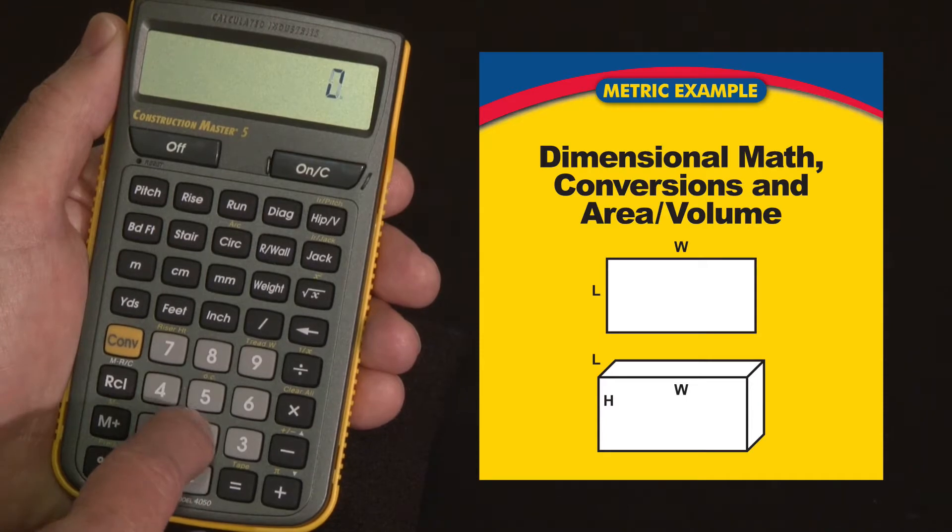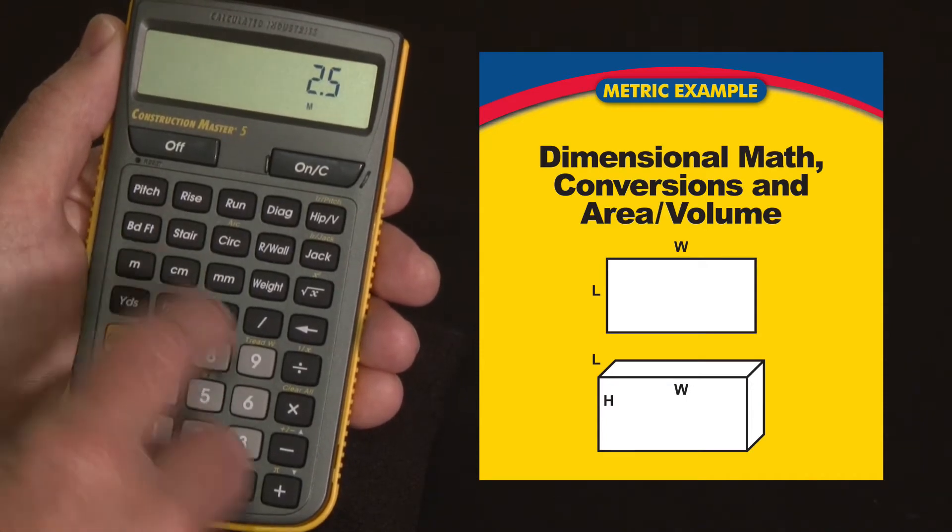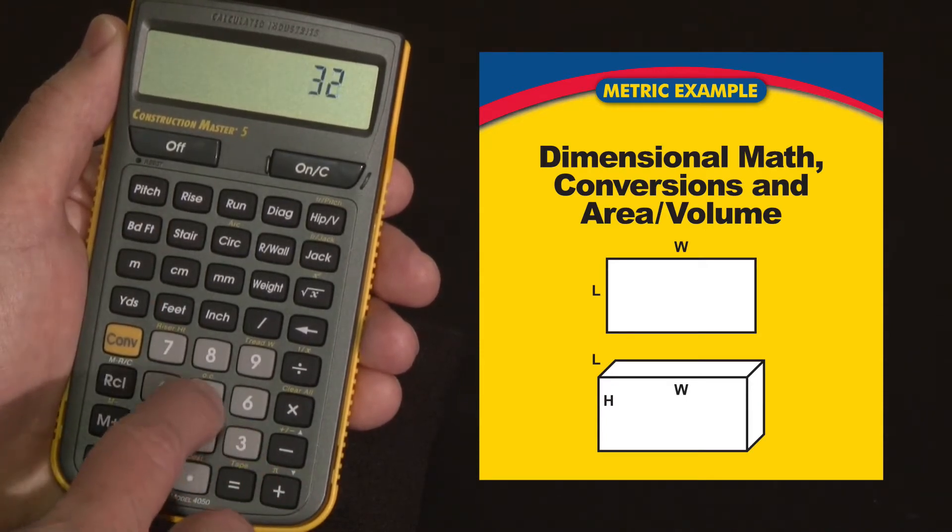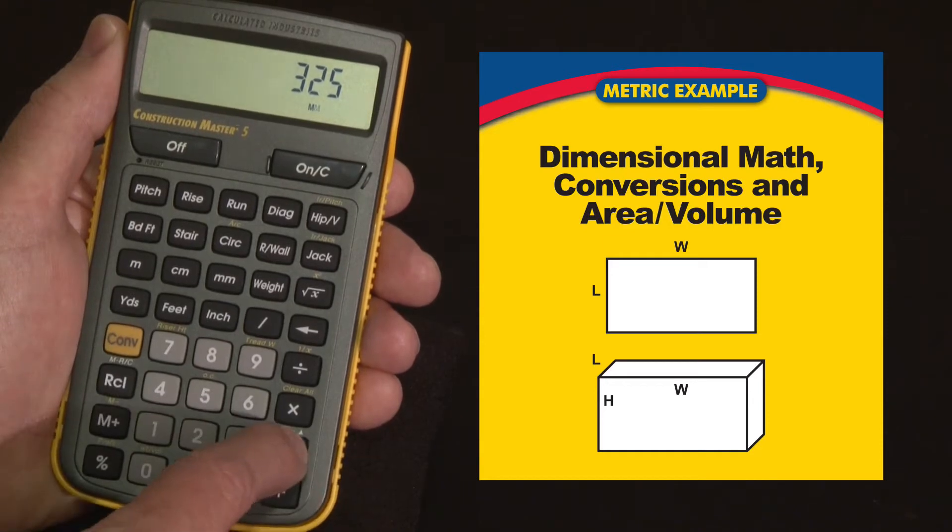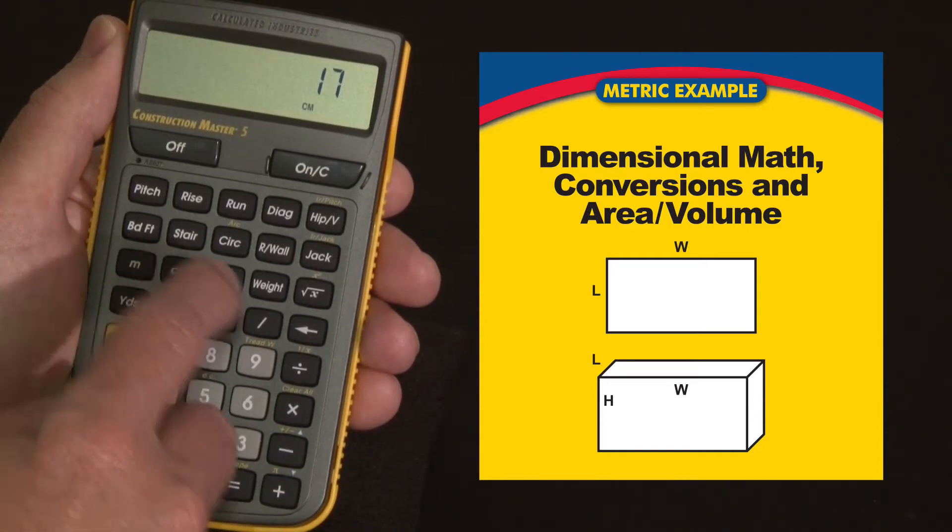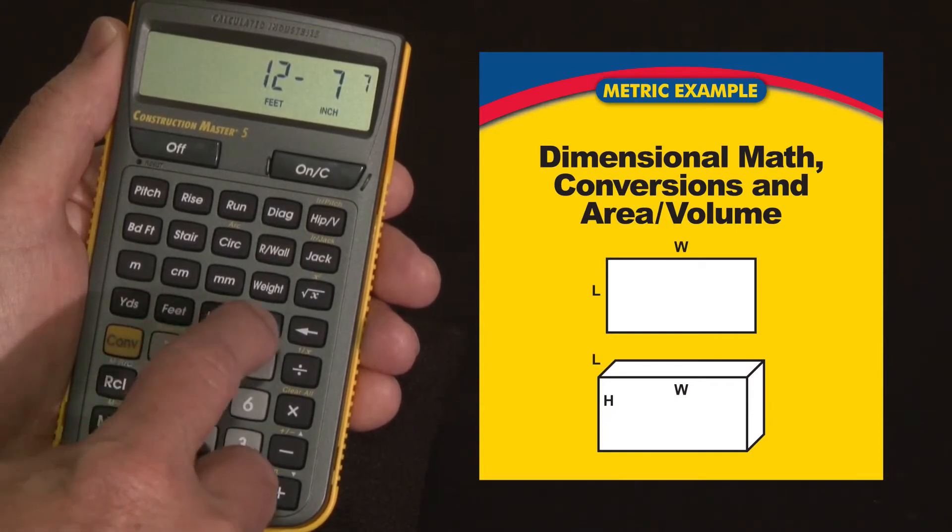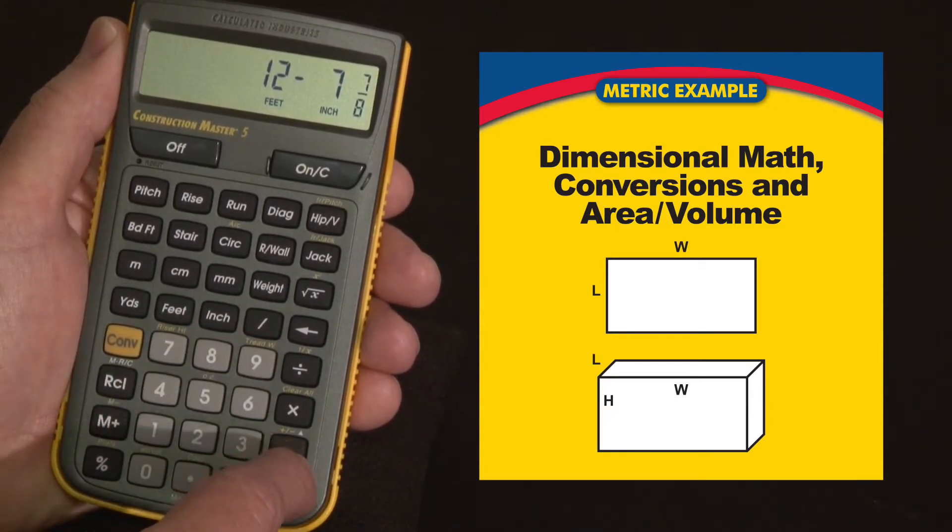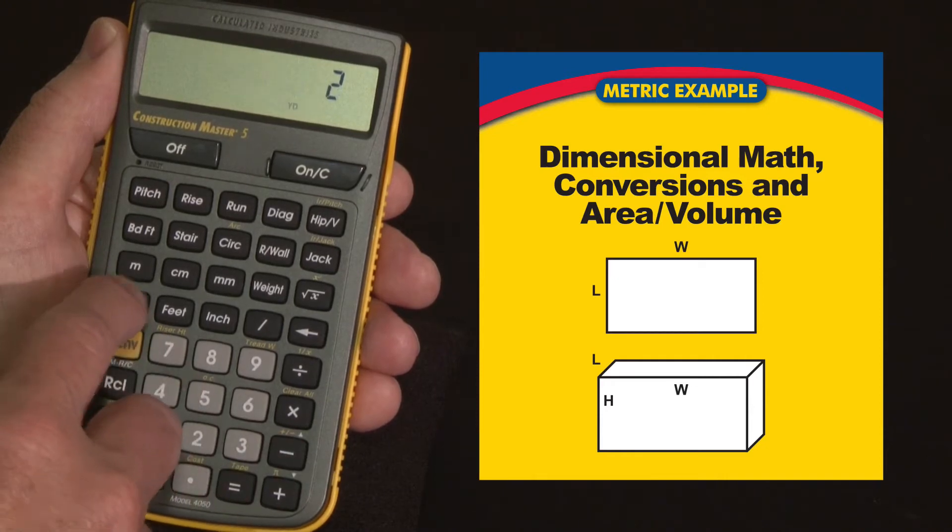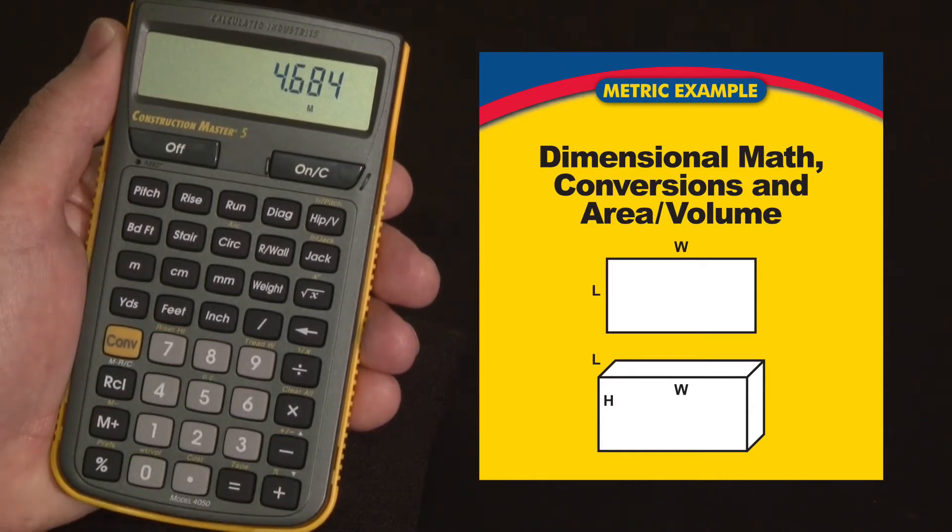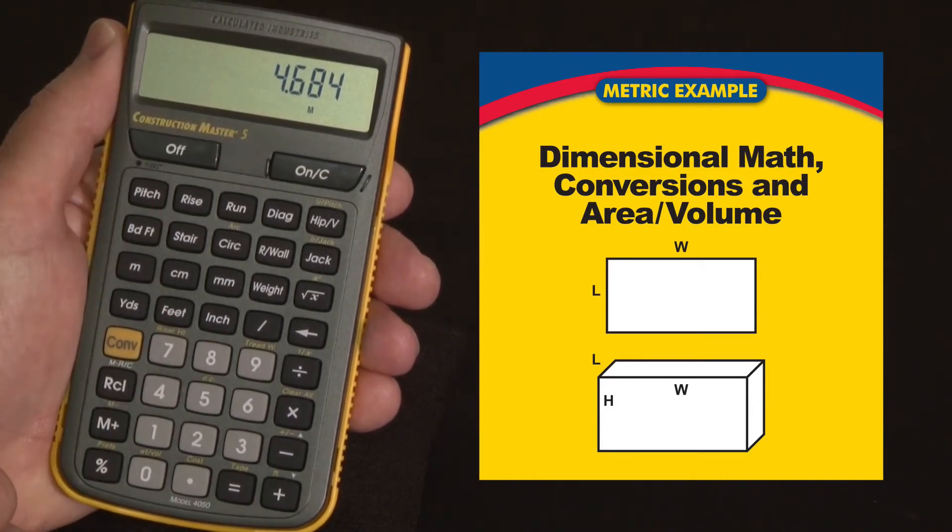The way you enter a value is 2.5 meters, let's say plus 325 millimeters, minus 17 centimeters. But you can mix values - let's say plus 12 feet 7 inch and 7/8 minus 2 yards. Hit the equals key and it comes back in the format we started with, which is meters.